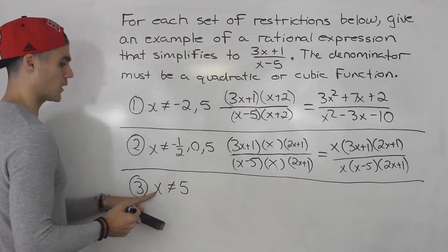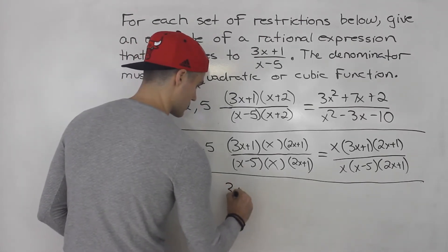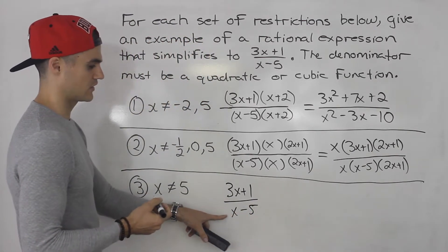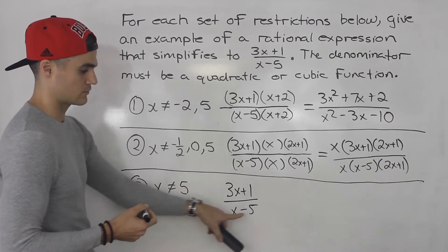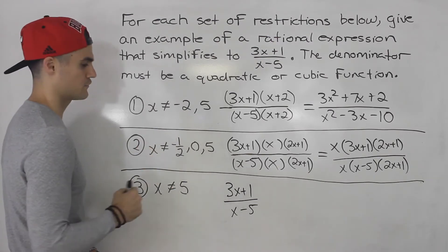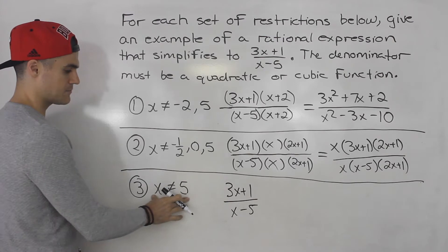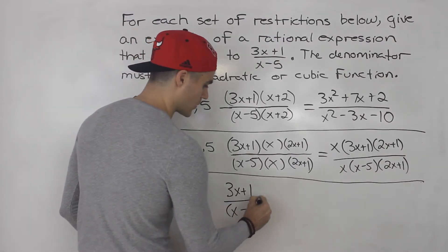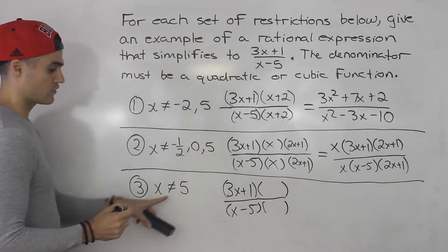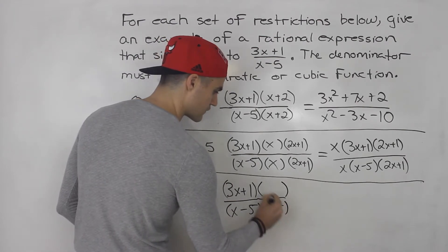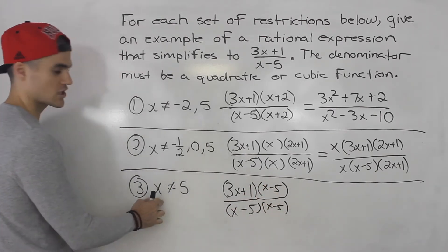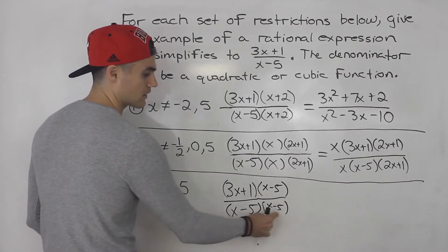Finally, for number 3, we have only one restriction: x cannot equal 5. Let's rewrite what we are simplifying to. Technically we could leave the denominator as just (x-5), since that already enforces x cannot equal 5. The problem is we're told the denominator must be a quadratic or cubic. So we need another bracket. That bracket must be another (x-5), because adding a different factor would introduce a new restriction. Having (x-5) twice means those two factors cancel, but x still can't equal 5.